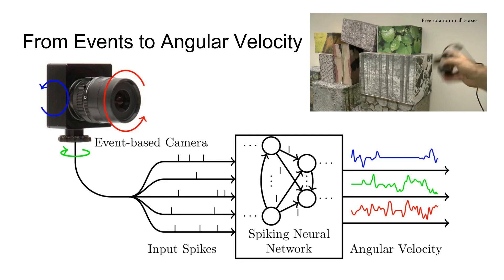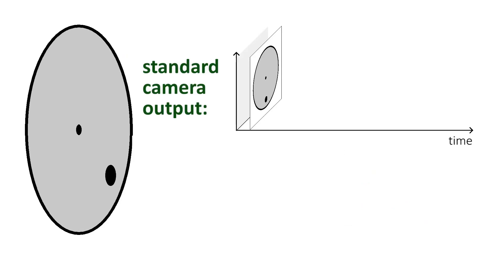Unlike conventional processing methods, SNNs can process events asynchronously and can run at very low power on neuromorphic hardware. Before we start, let us recapitulate the working principle of an event camera.